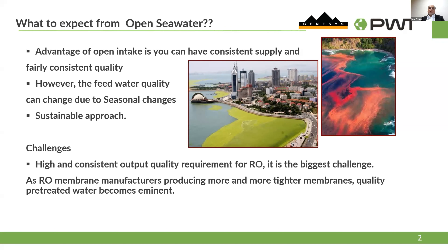The picture here shows one of our plants in China. You can see the green tide, and on the right side is the red tide, which you usually see in the Middle East. These are big challenges for an RO plant. You need to have proper pretreatment, because with the high and consistent output quality requirement for RO, it's the biggest challenge.